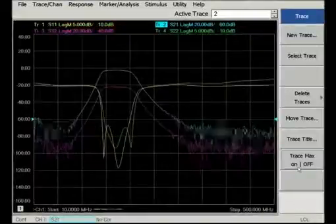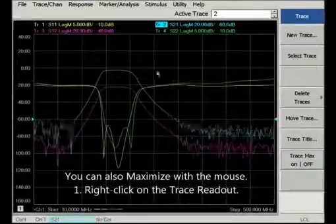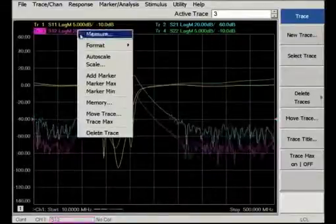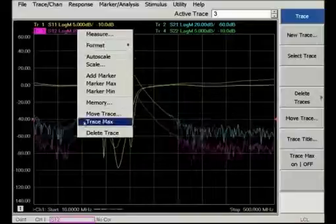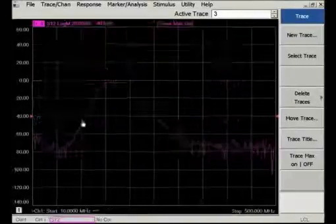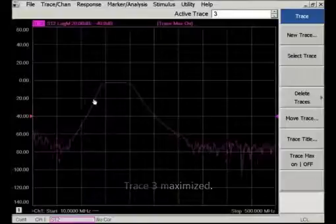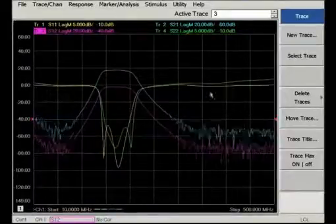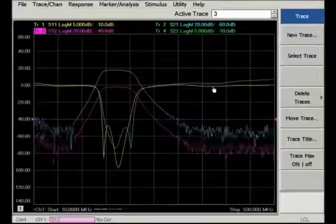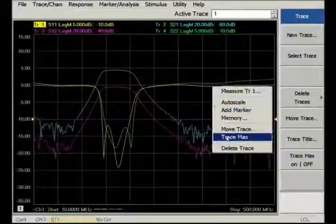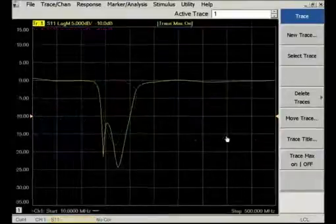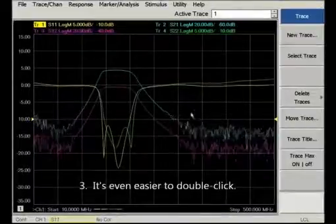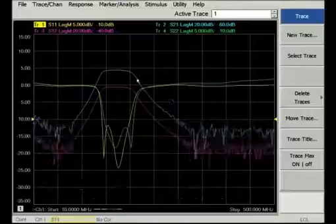With the mouse, it's even easier to use TraceMax. There are three ways to do it. First, you can right-click on the Trace label and select TraceMax from the pop-up menu. Or you can right-click on the Trace itself and again select TraceMax from the pop-up menu. The easiest way to maximize a trace is to double-click. Double-click on either the Trace label or the trace itself.